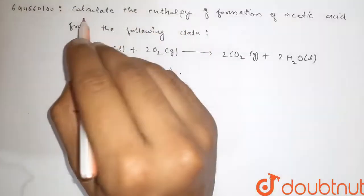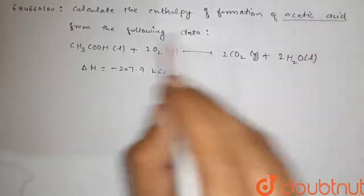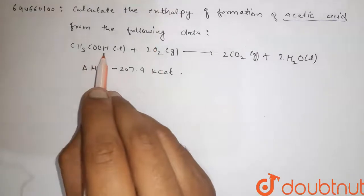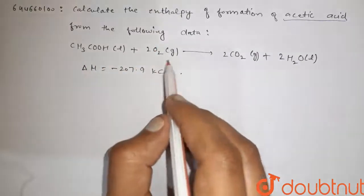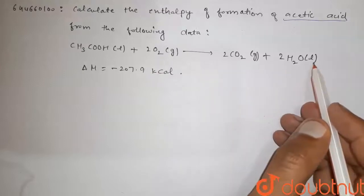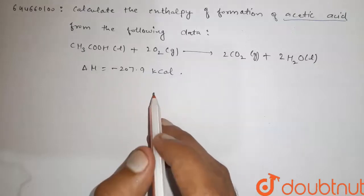Hi guys, here is the question. Calculate the enthalpy of formation of acetic acid from the following data. That is CH3COOH liquid plus 2O2 gas that gives 2CO2 gas plus 2H2O liquid. Delta H is minus 207.9 kilocalorie.